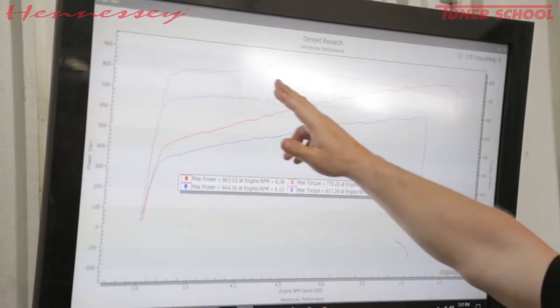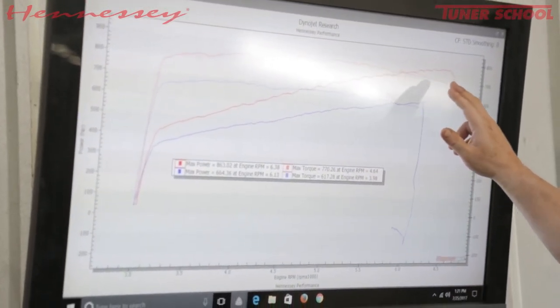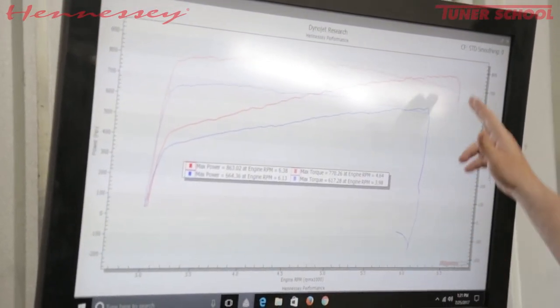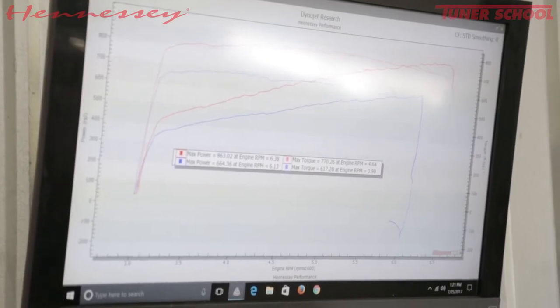And it carries it out, it's making over 800 rear wheel foot-pounds of torque all the way to about 6400 RPM, and even right at 6500 RPM, it's still just a hair under 800. That's just nuts.